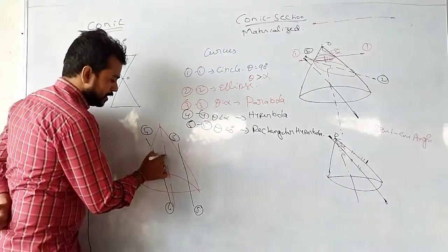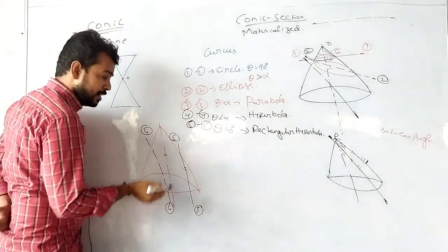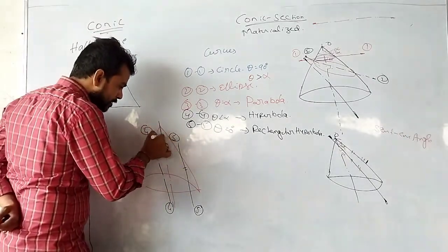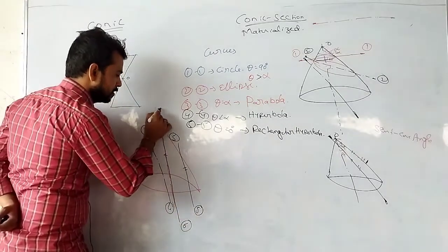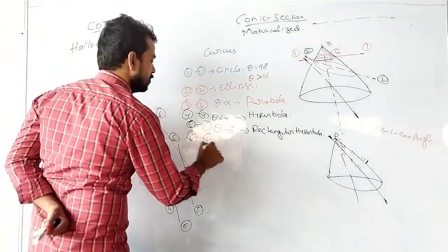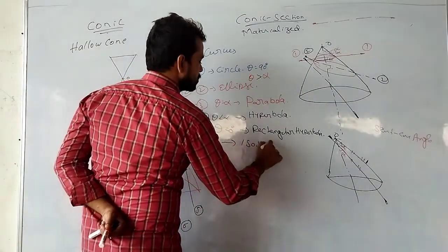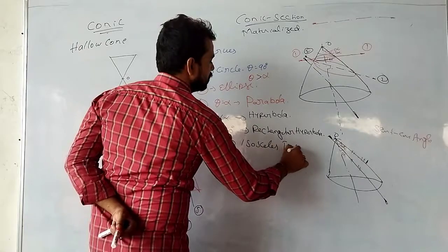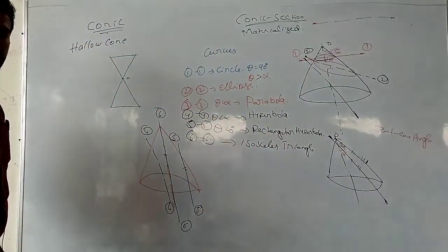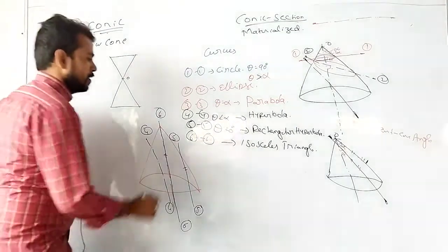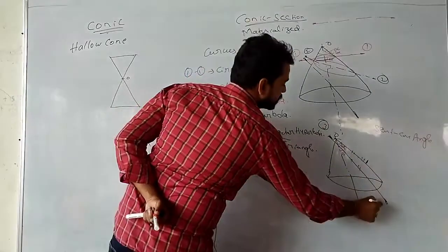Even when the axis and section plane are parallel to each other, if they coincide with each other — section 6-6 — then you get an isosceles triangle.